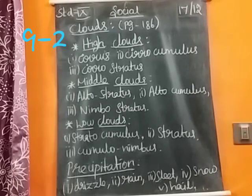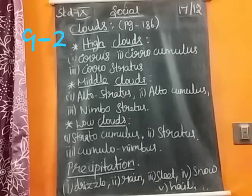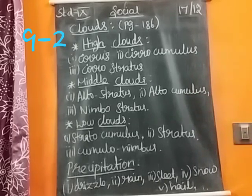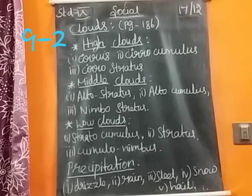The main forms of precipitation are drizzle, rain, sleet, snow, and hail. The climatic factors influencing the forms of precipitation are mainly temperature, altitude, and cloud type.